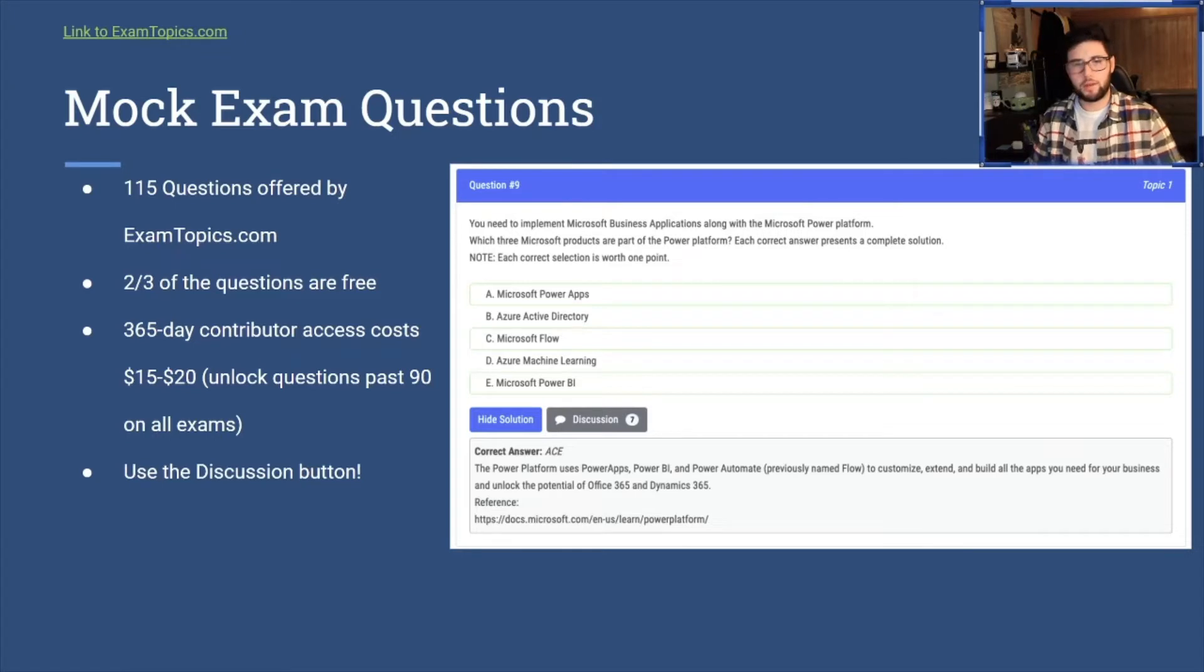The questions are fairly simple. They're kind of like this. Now the way that examtopics.com works is that each 15 questions or so are set up by the product. So first 15 will be Power BI, next 15 will be Power Automate, and then so on, Power Apps. And then the last third might just be questions about scenarios, situations that you're going to need to know how to sell the product.